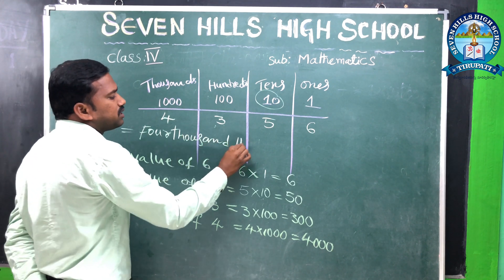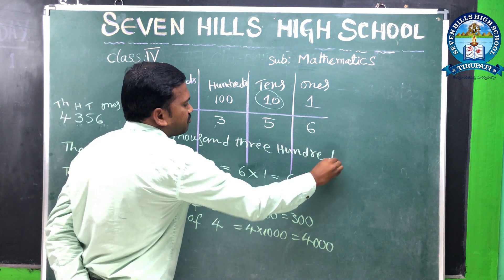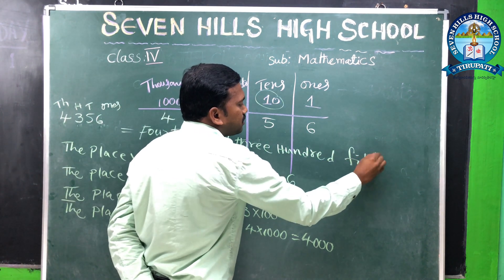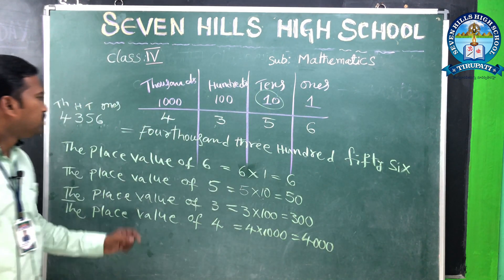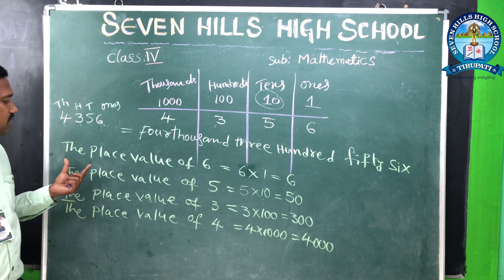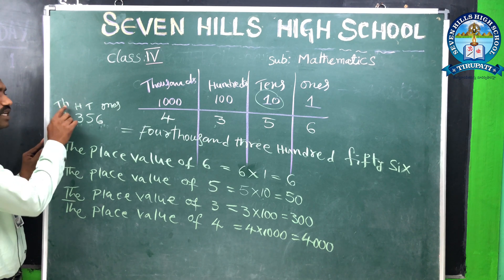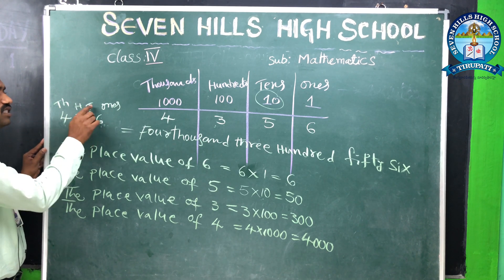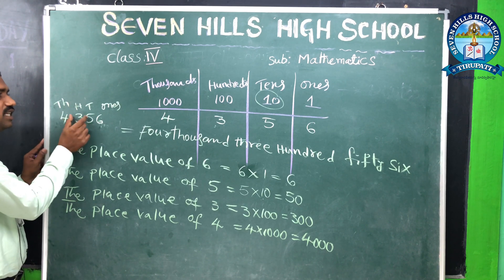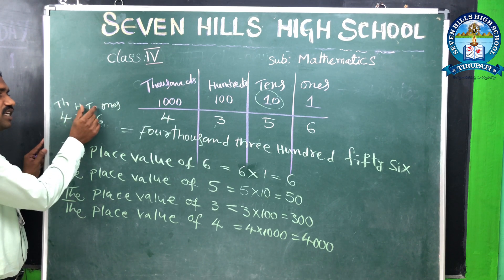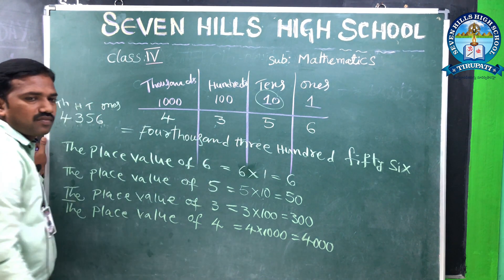4 is in the thousands place, 3 is in the hundreds place, 5 is in the tens place, 6 is in the ones place — so we read it as 4356. Got it?